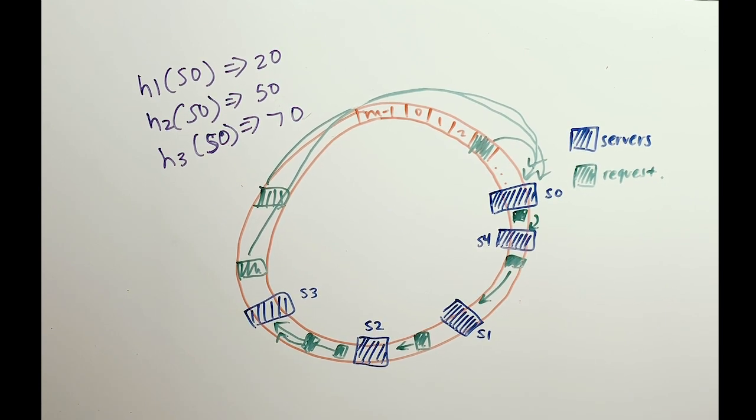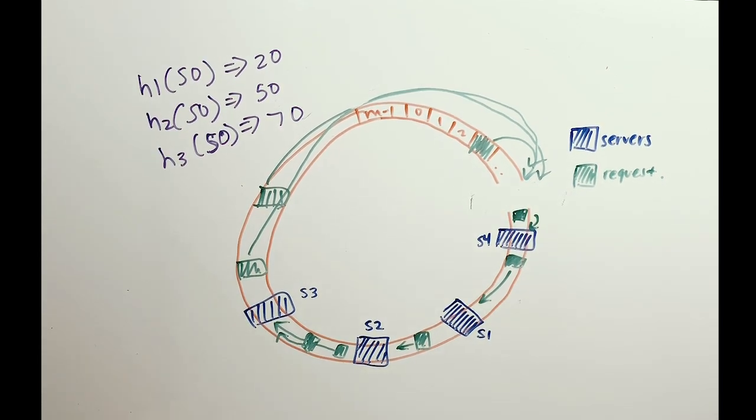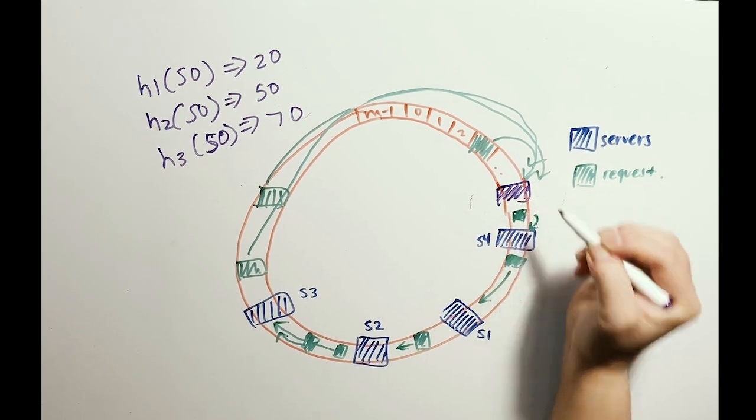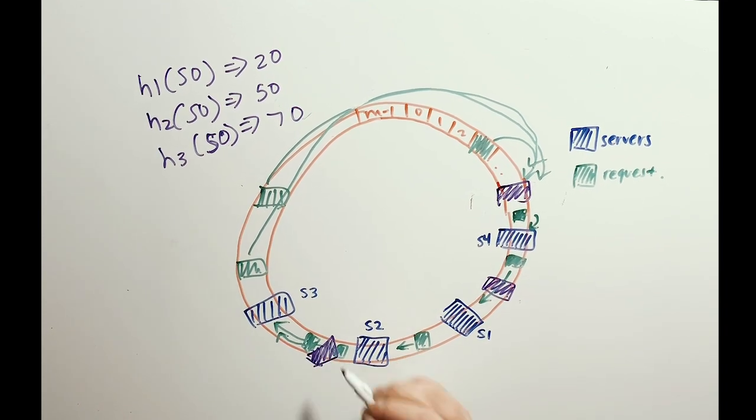This means that server S0 lives in multiple places on the hash ring. Instead of being here on the hash ring, it can now live here, and here, and here. This increases the randomness of the load, and when a new server is added, the requests that are affected are more uniformly random.